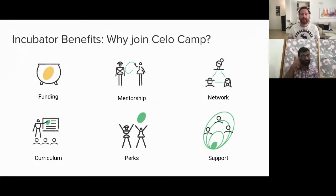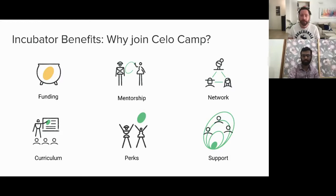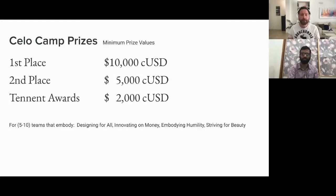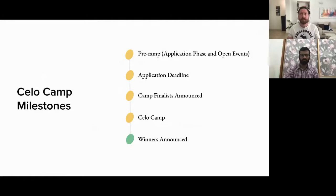Why join the camp? We have great perks including Amazon credits, HubSpot credits, opportunities to get funding, mentorships from great mentors, networking within our ecosystem, and support while you build your project. We also have a curriculum built from two years of experience accelerating blockchain startups. We have wonderful prizes: $10,000 first place, $5,000 second place, and five $2,000 prizes for participants. And it's completely free — we don't take anything.